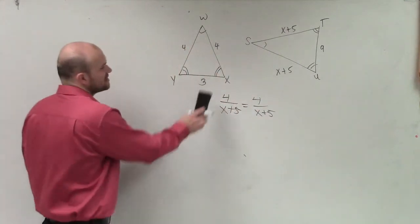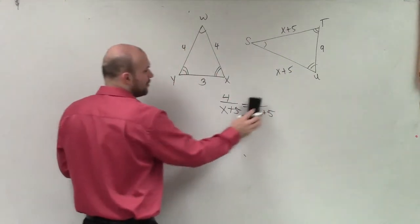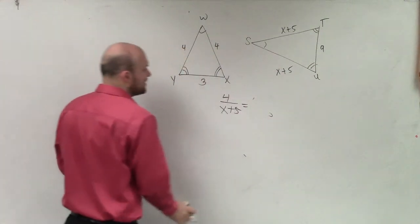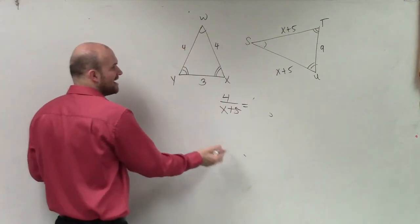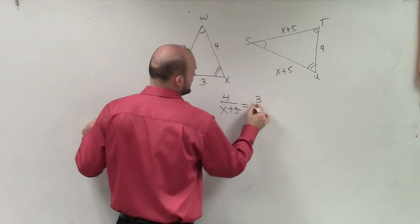What we need to do is use this third side as one of our ratios. So I can say 4 is to x plus 5 as 3 is to 9.